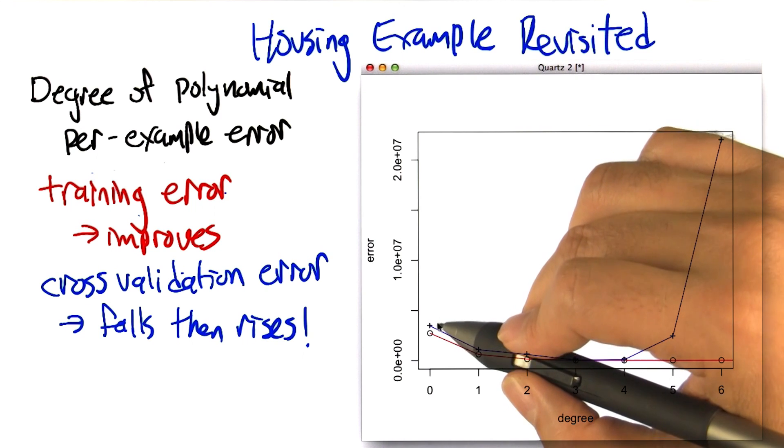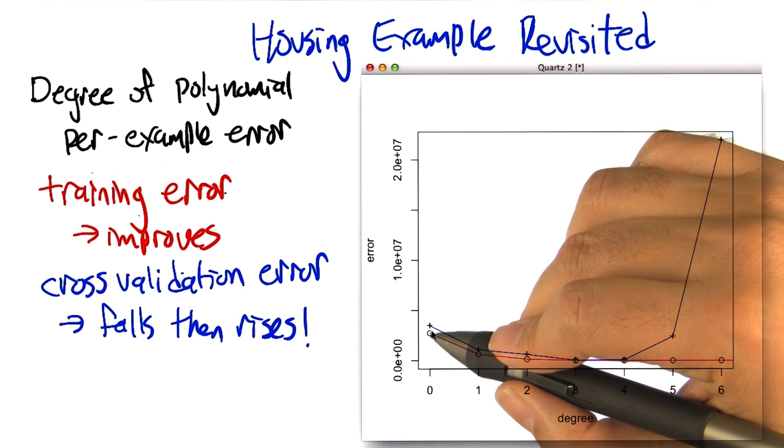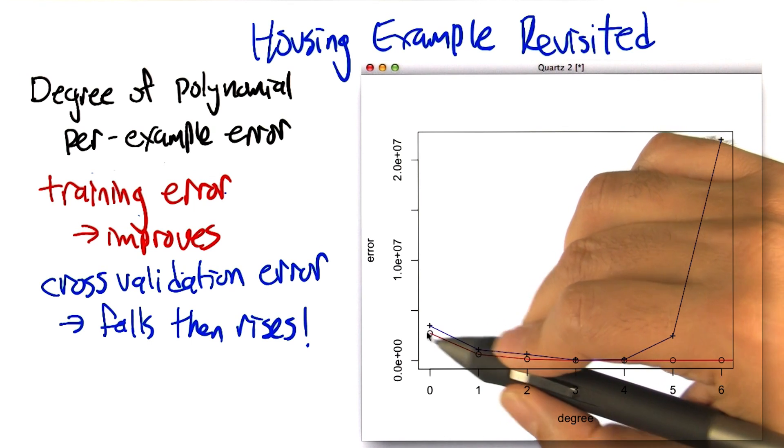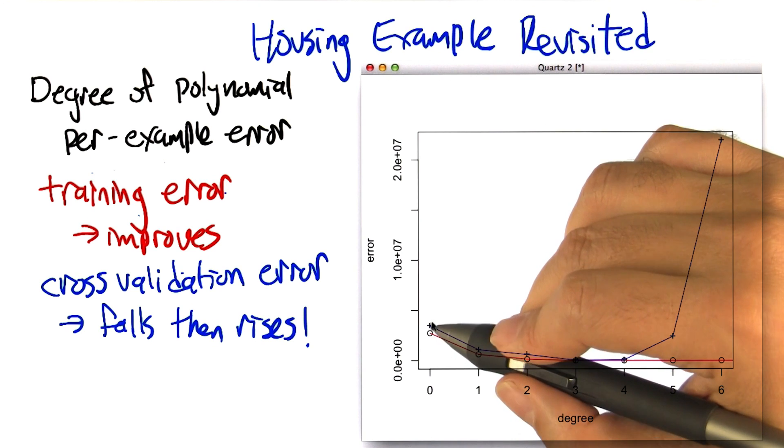Well that makes sense, right? Because we're actually training to minimize error on the training set. So the parts we aren't looking at, you're more likely to have some error with. So it makes sense that you'd have a little bit more error on the data you haven't seen. Right, so good.